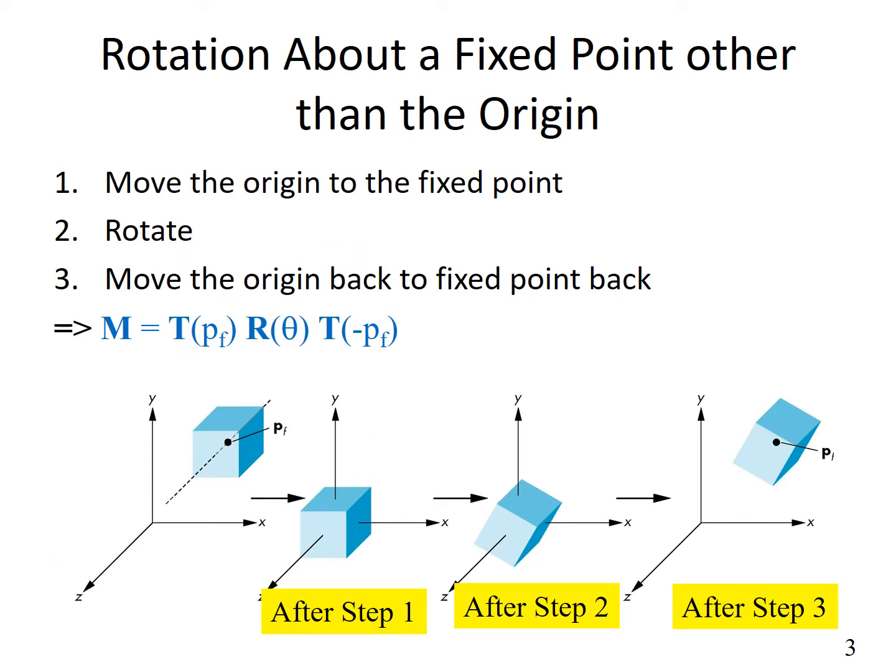Rotation about a fixed point other than the origin is a little complicated. In the previous lecture we were performing all rotations about the origin. If you want to rotate this cube about some other point, which could be the center of gravity or some other arbitrary point, in most cases we want to see an object rotating about its center of gravity.